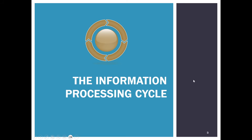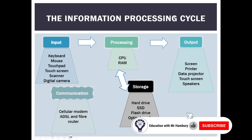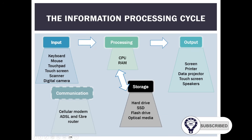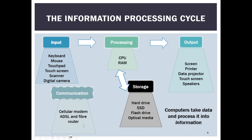The information processing cycle consists of input, processing, output, storage, and communication. They give us a few examples and we're going to go through this in detail — some hardware devices that relate to input, some that relate to processing, output, storage, and communication. The computer takes data, processes it into information — that's what this is all about.